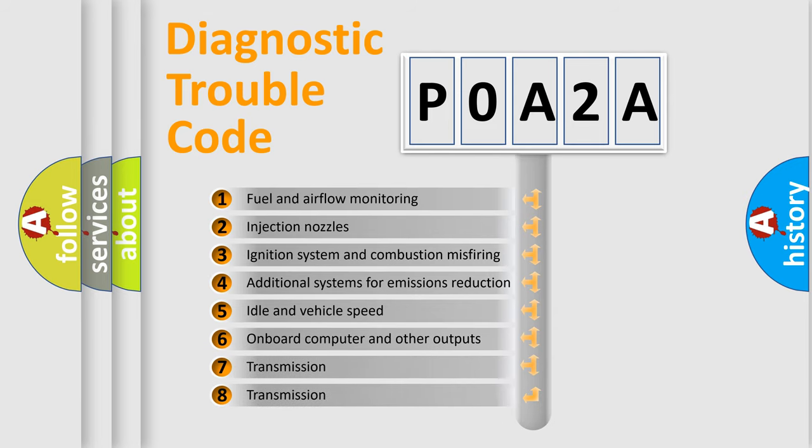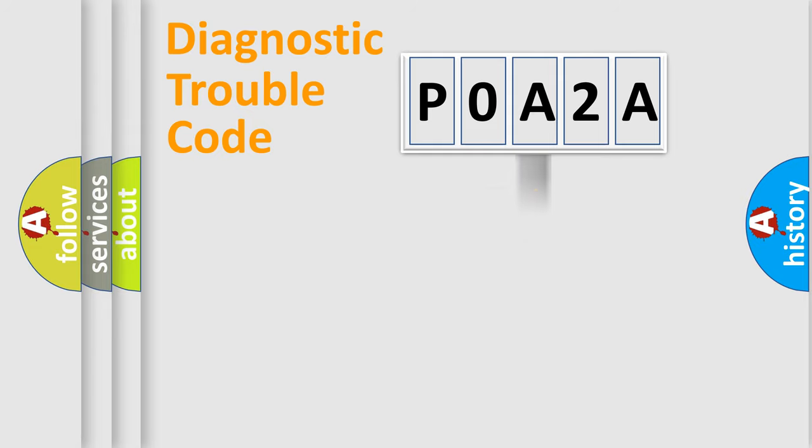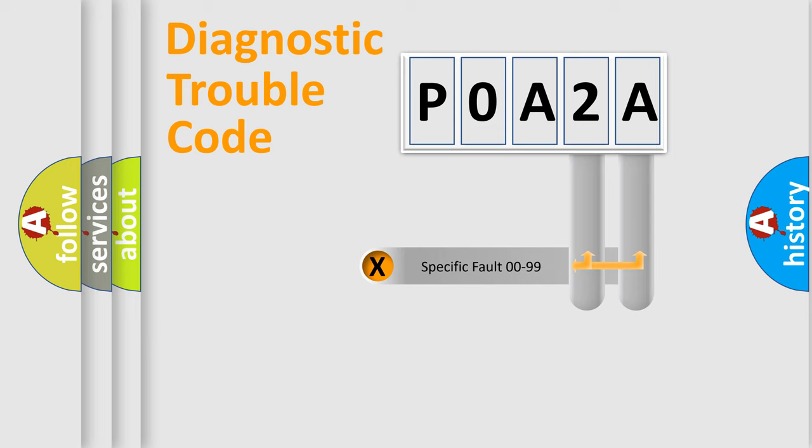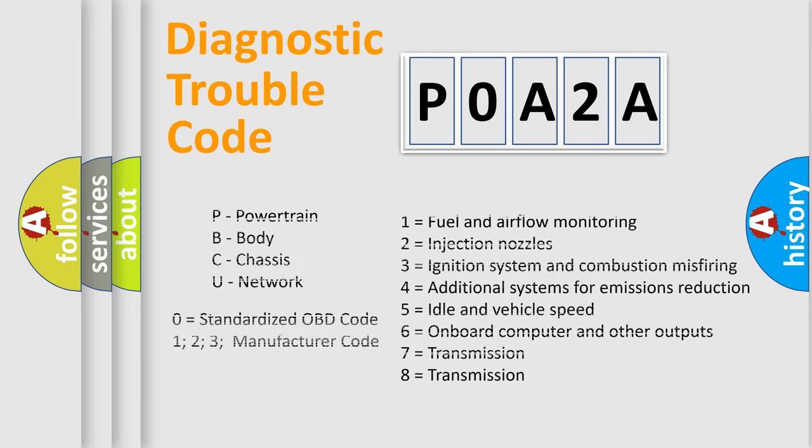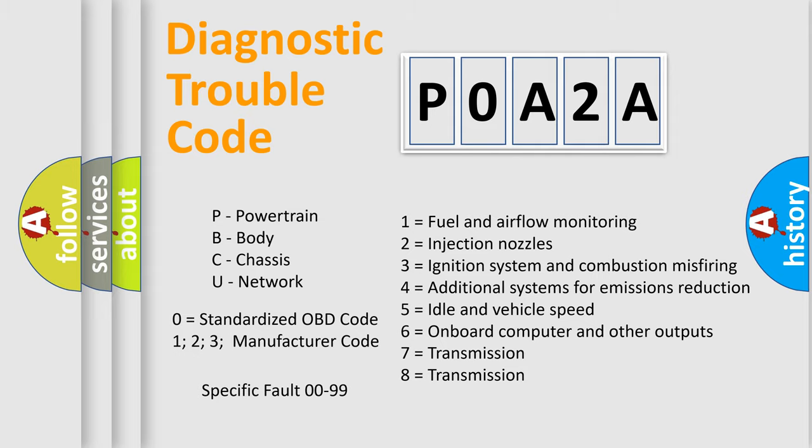The distribution shown is valid only for the standardized DTC code. Only the last two characters define the specific fault of the group. Let's not forget that such a division is valid only if the second character code is expressed by the number zero.